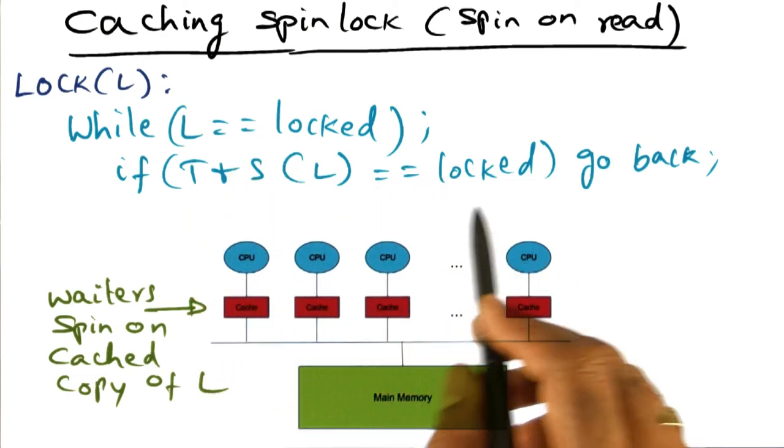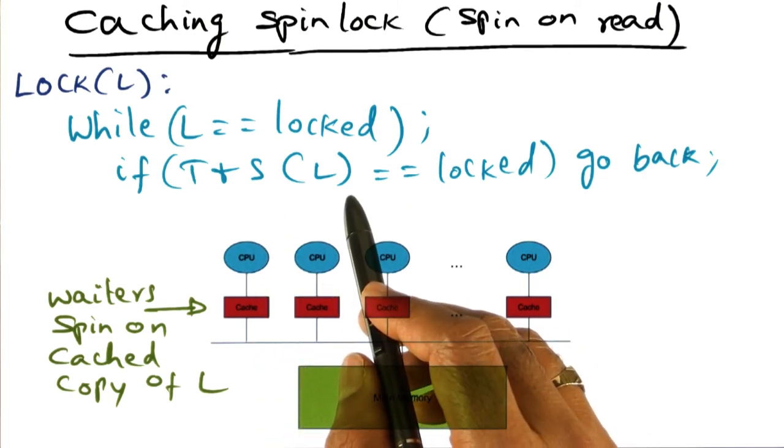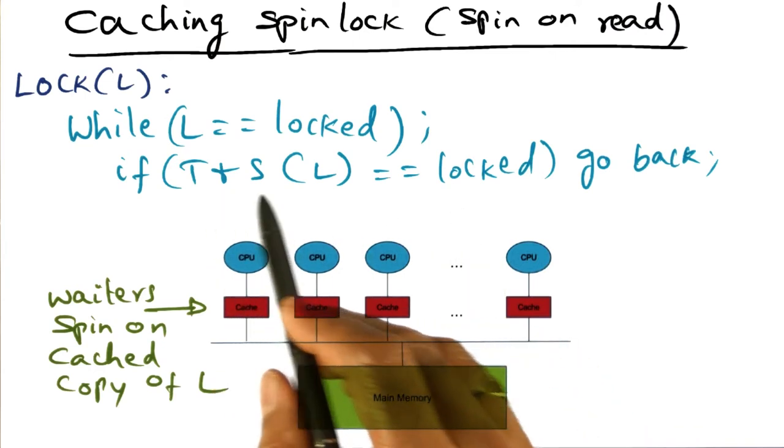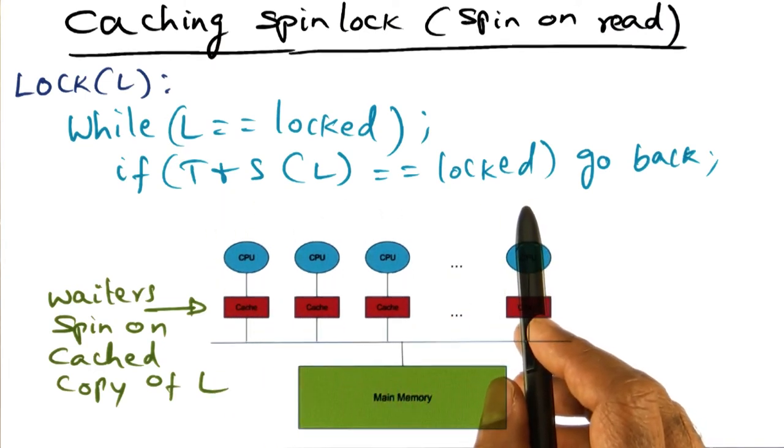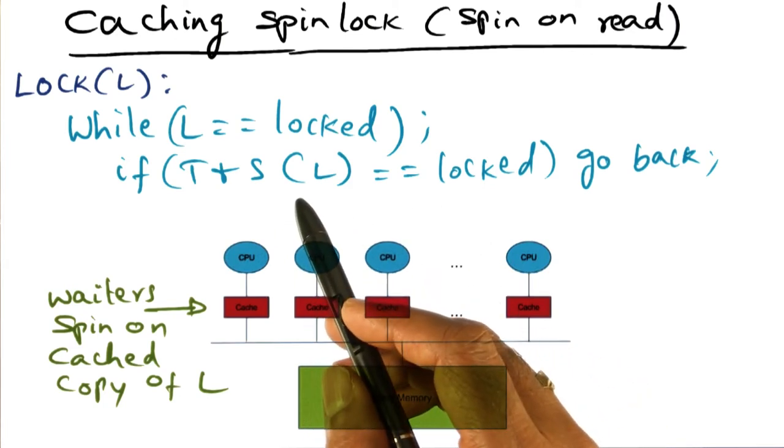But immediately I want to check if the lock is available by doing this test and set and get it uniquely for myself. So if multiple processes are trying to execute this test and set simultaneously, it's possible that somebody else is going to beat me to the punch. And if that happens,